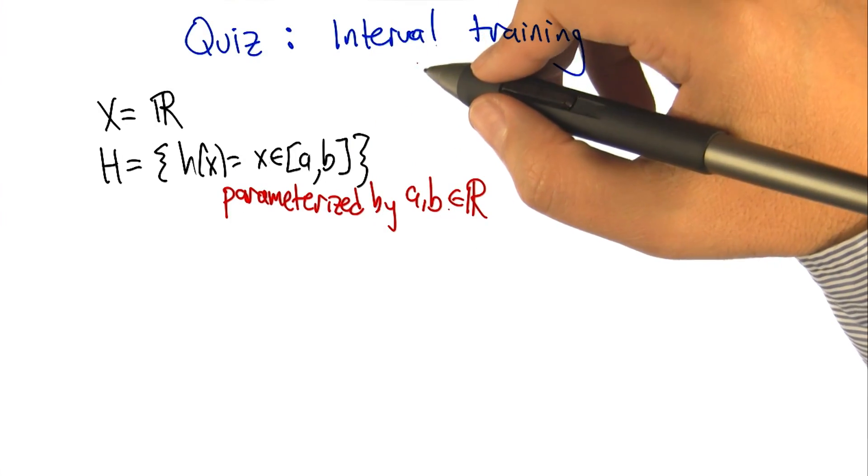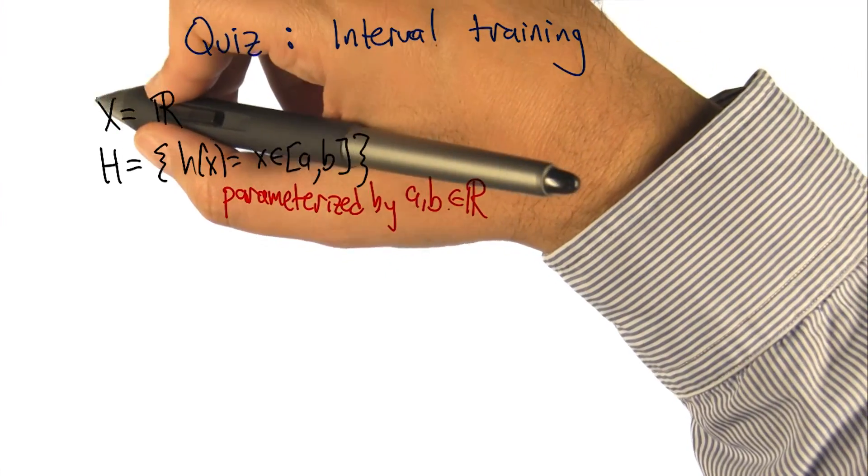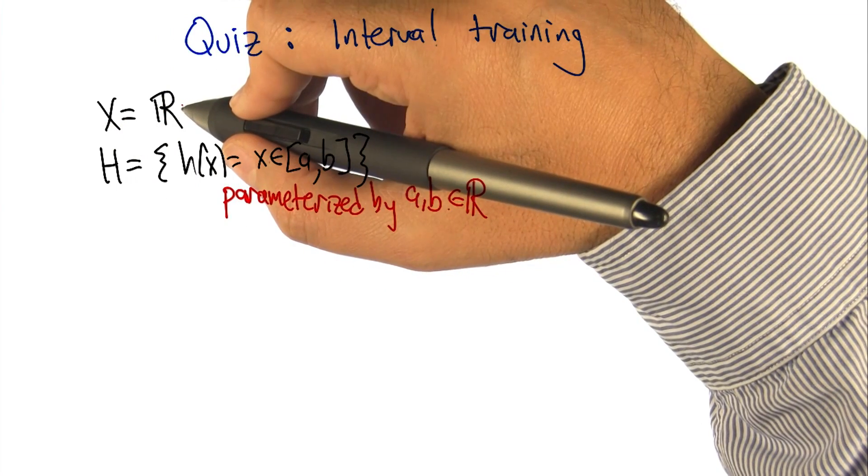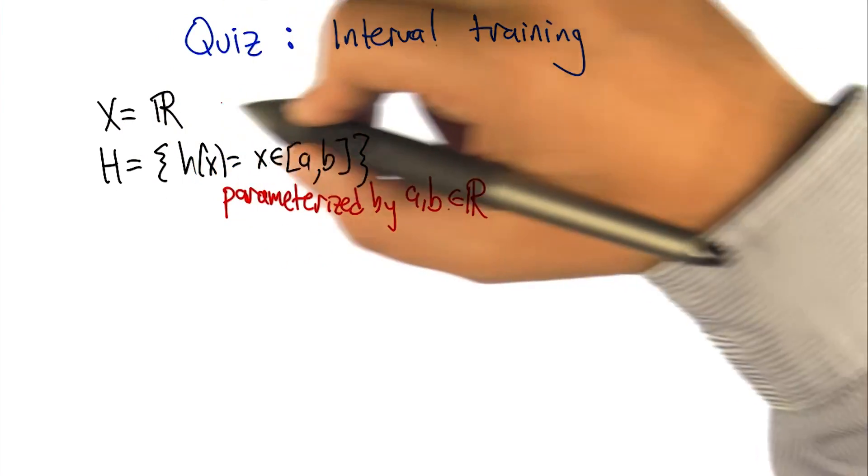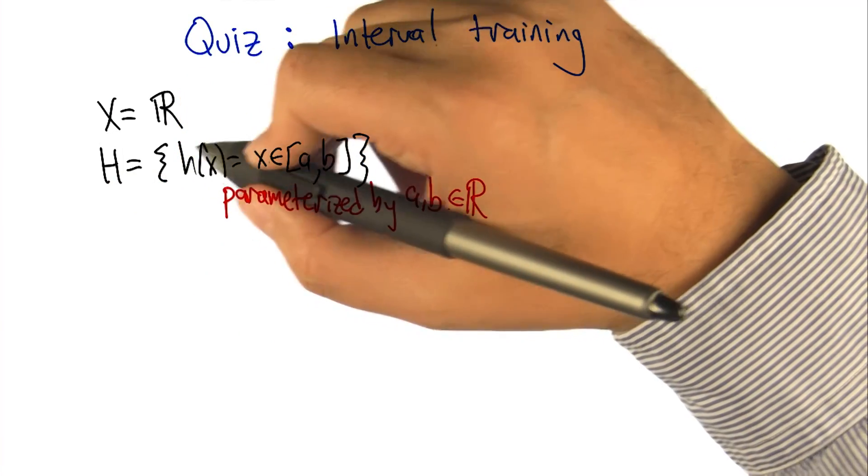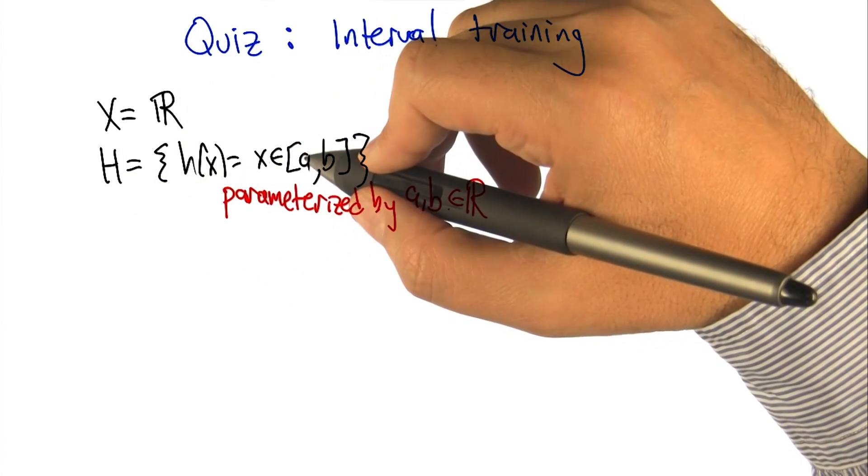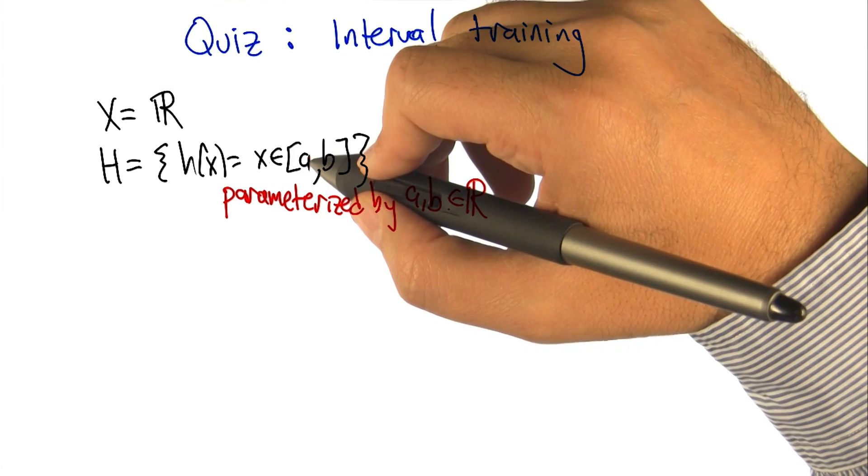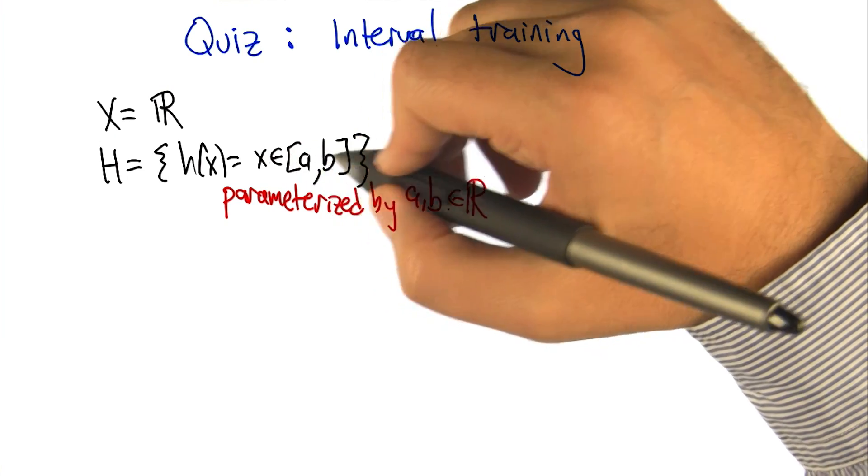Let's look at a concrete example where the hypothesis space is the set of intervals. The inputs we're trying to learn about are just single numbers on the real line. The hypothesis space is the set of functions that return true for all the things that are between A and B, and this is parameterized by A and B.